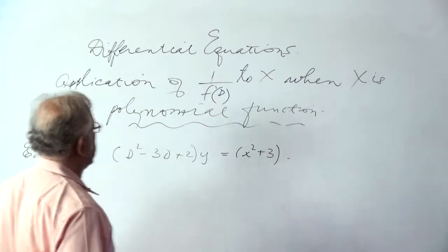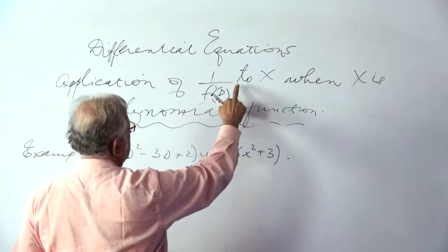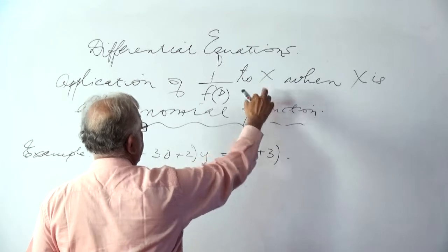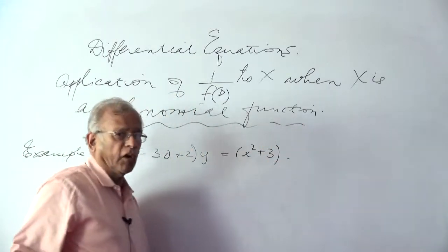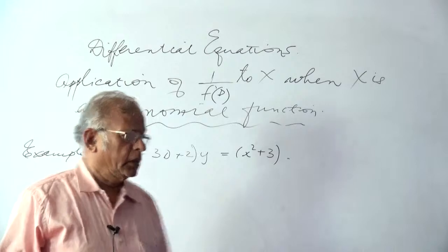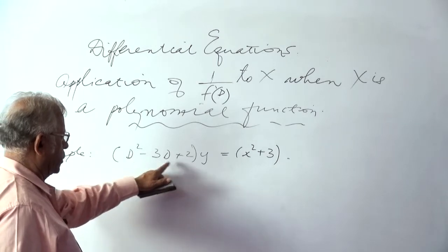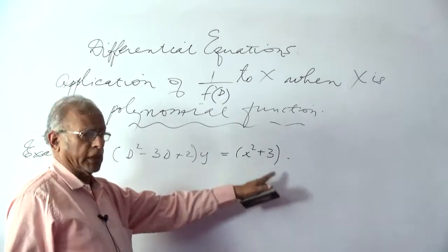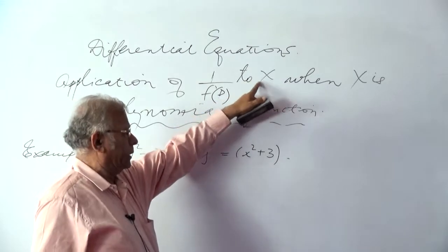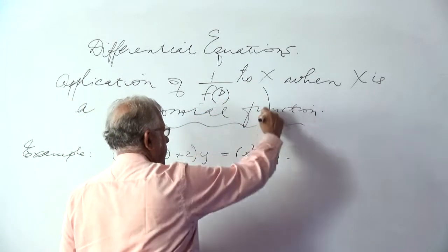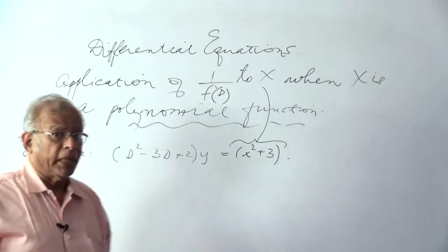We now take the case of application of the inverse operator 1 over f(D) to X, where X is a polynomial function involving integral powers of x. Let us try to solve this equation: D squared minus 3D plus 2, y is equal to x squared plus 3. Applying 1 over f(D) to x squared plus 3 will result in a particular integral.